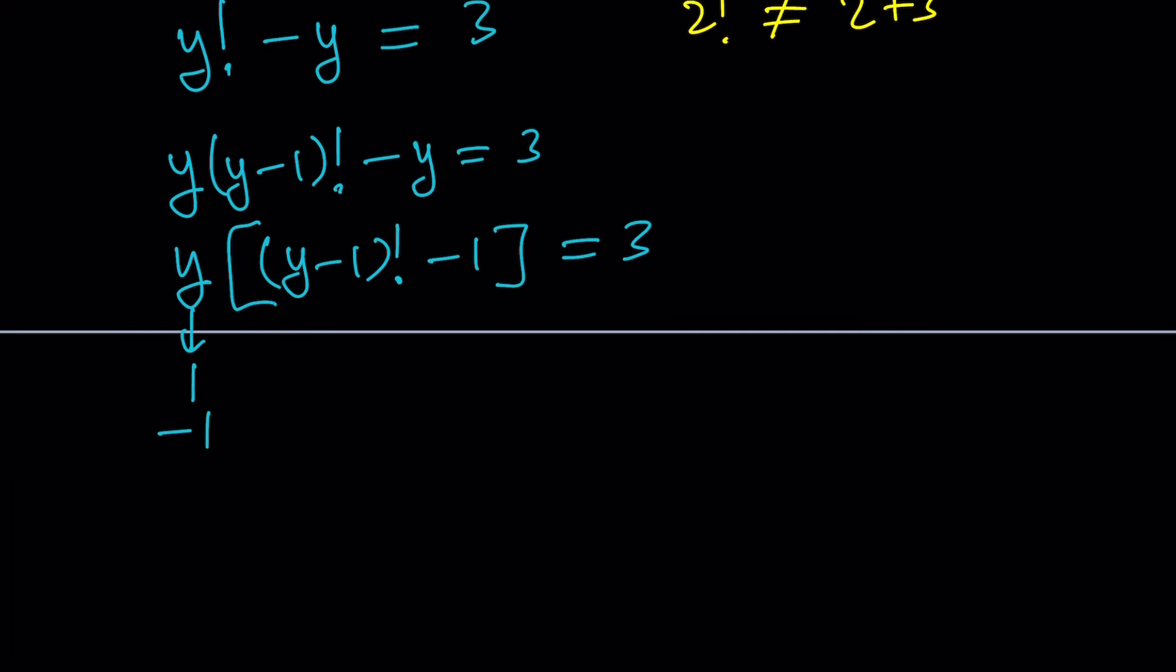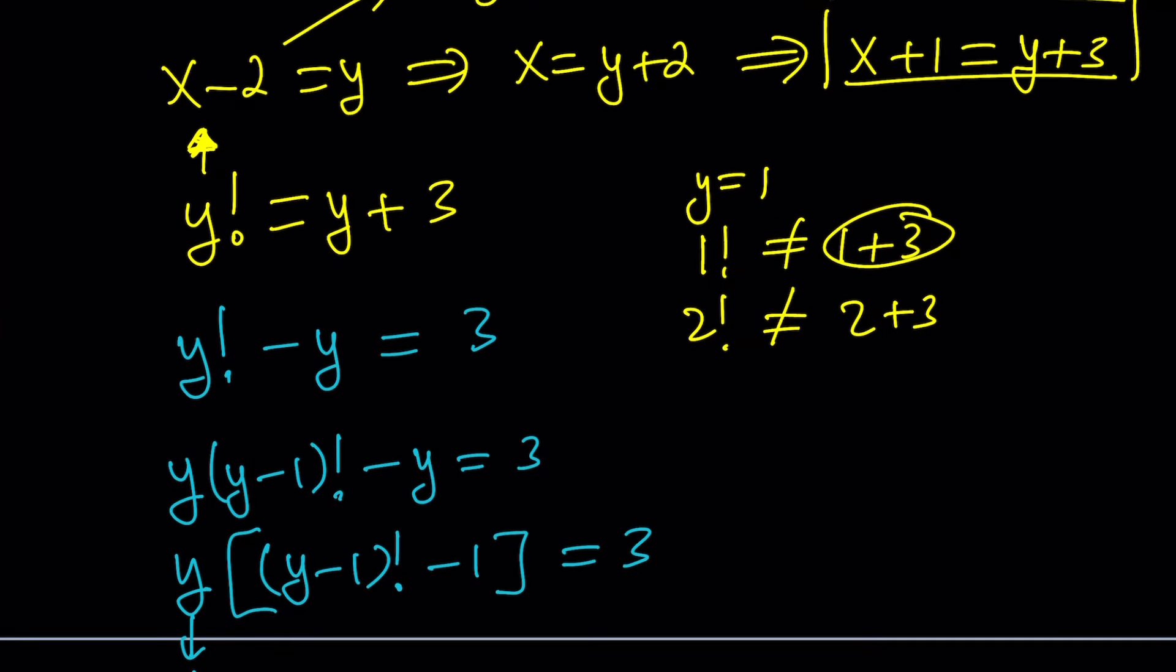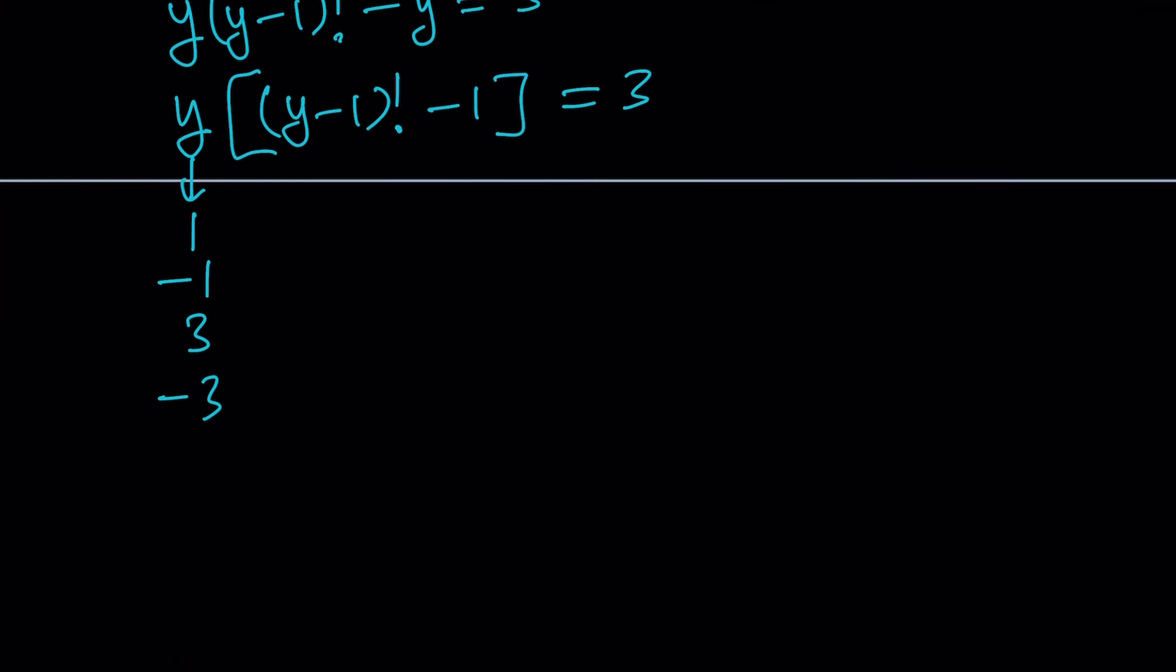1, negative 1, 3, and negative 3. You've got to be careful, though. What is y equal to? Y is equal to x minus 2. So set these equal to x minus 2. And you're going to get the corresponding x values, and see if all of them are acceptable.